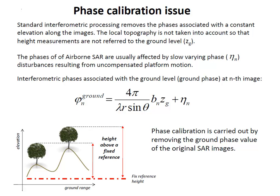Tomography is quite straightforward — we visit the site until we can learn what we care about. However, before carrying out the tomography analysis, we have to account for phase calibration issues. In tomography we are interested in the vertical direction, so we must remove the topography contribution by referring each layer to a height above the ground rather than to a fixed reference.